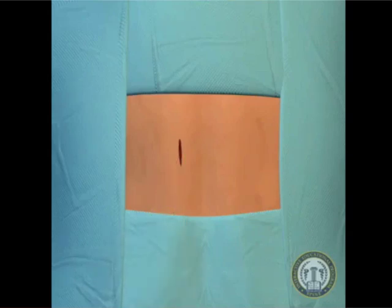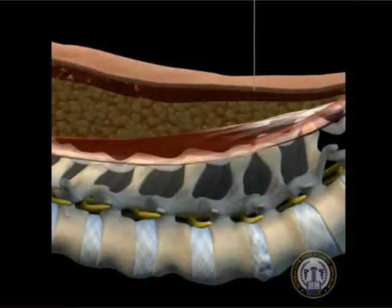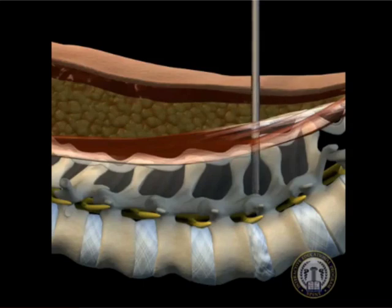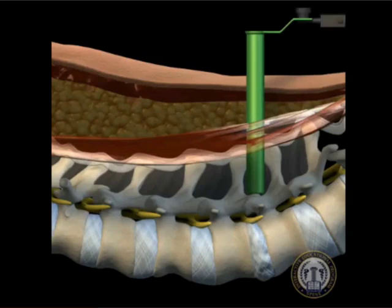A K-wire is directed using fluoroscopic guidance toward the facet complex with a lateral to medial trajectory. To minimize risk of neural injury, the wire is passed only through the fascia and muscle. Serial dilators are then passed over the wire to develop a muscle-splitting surgical channel. A properly-sized tubular retractor is then passed over the dilators and attached to the table frame via a flexible articulated frame.